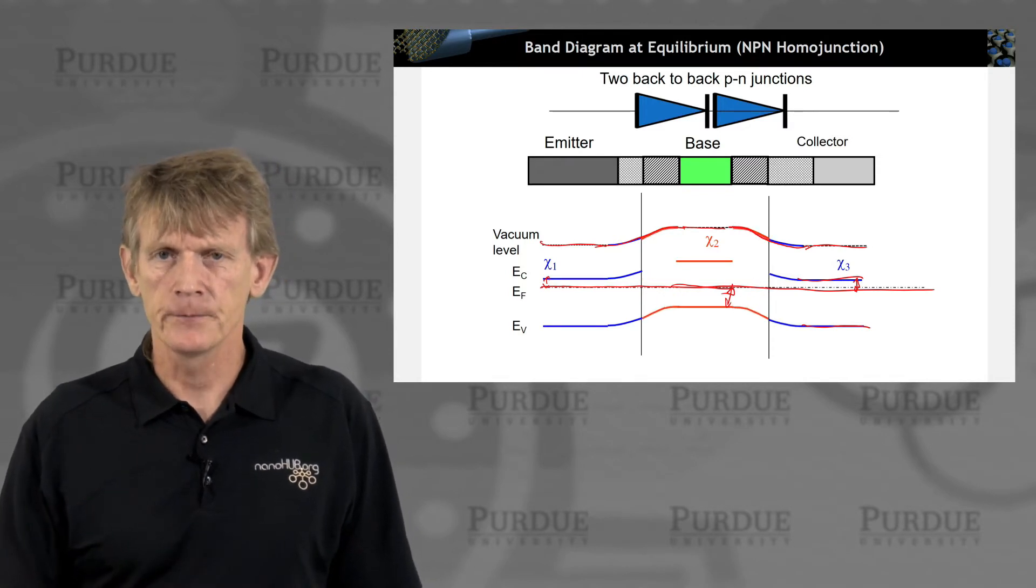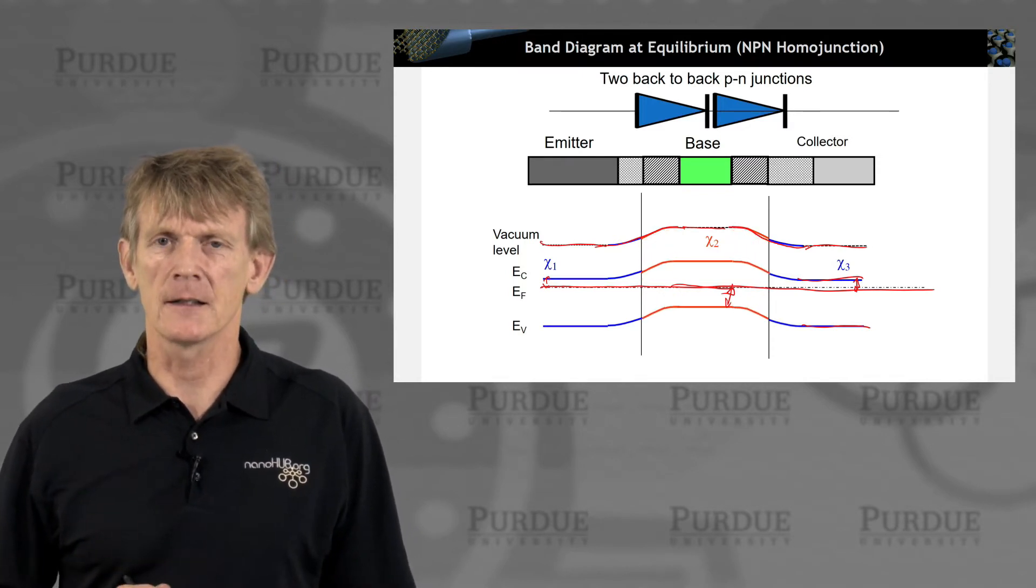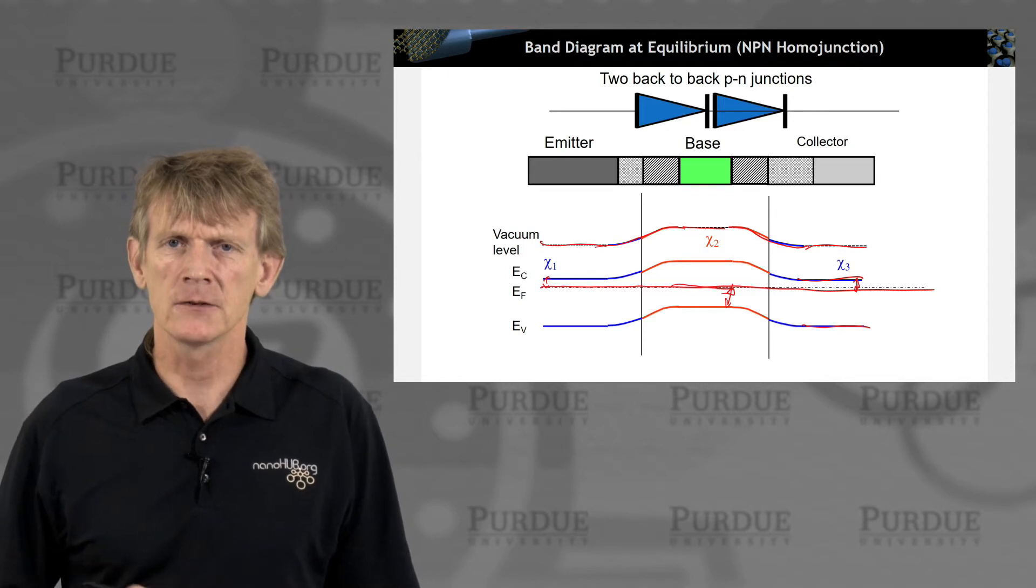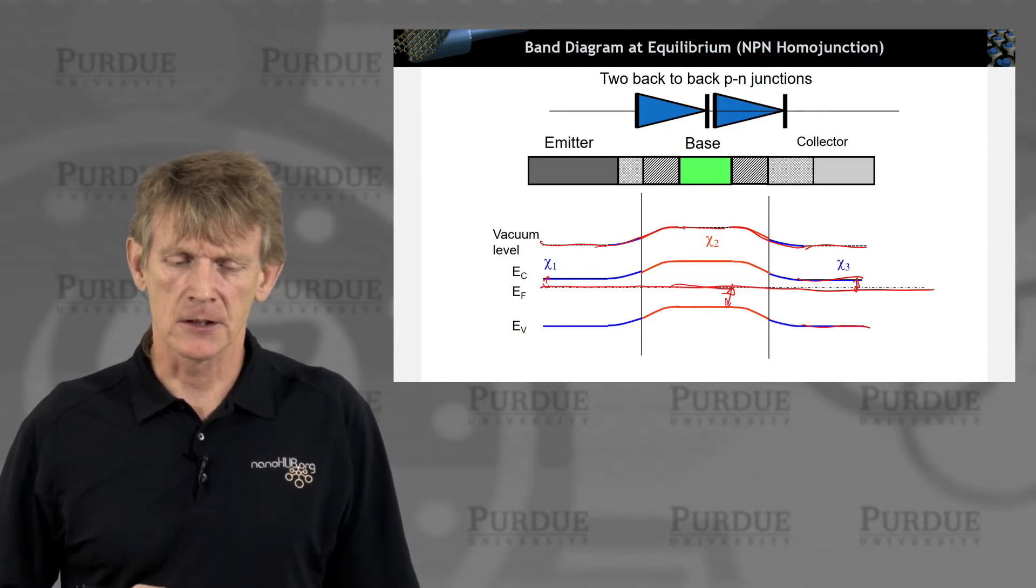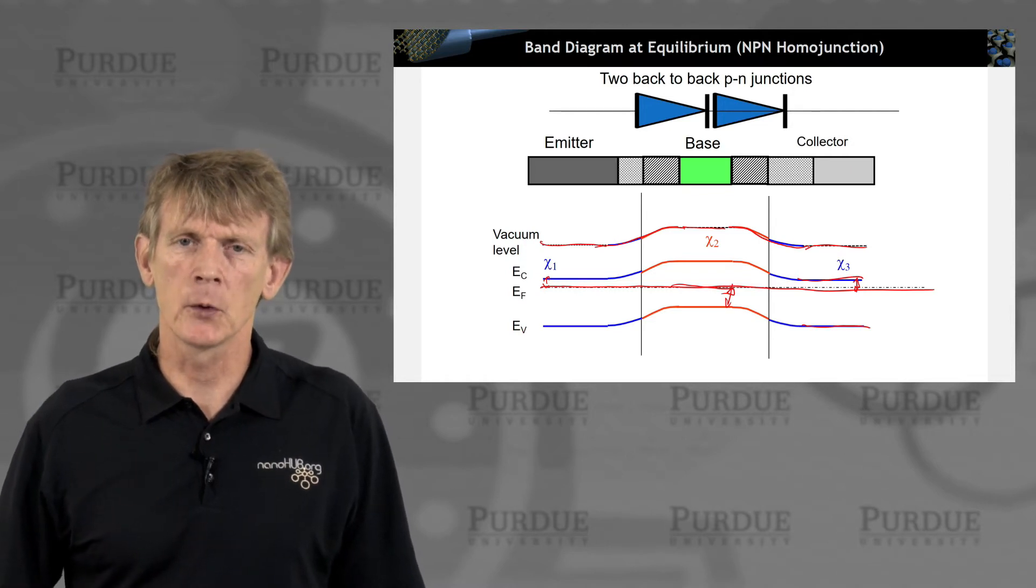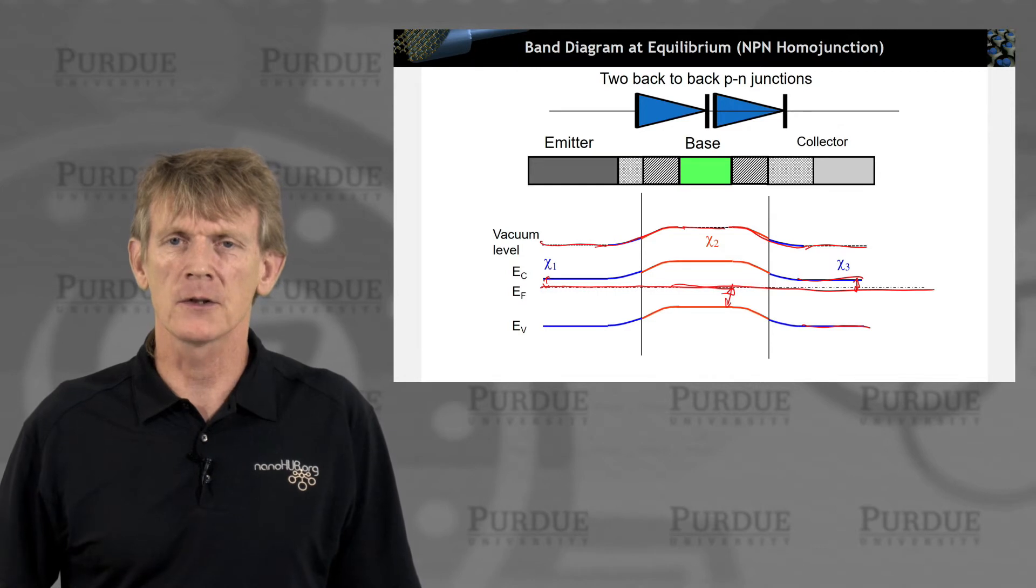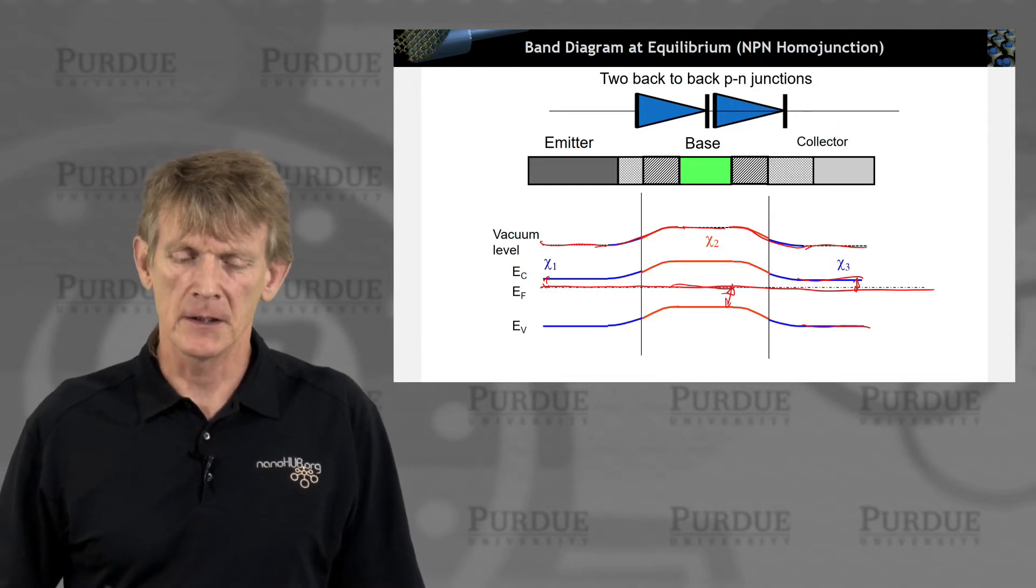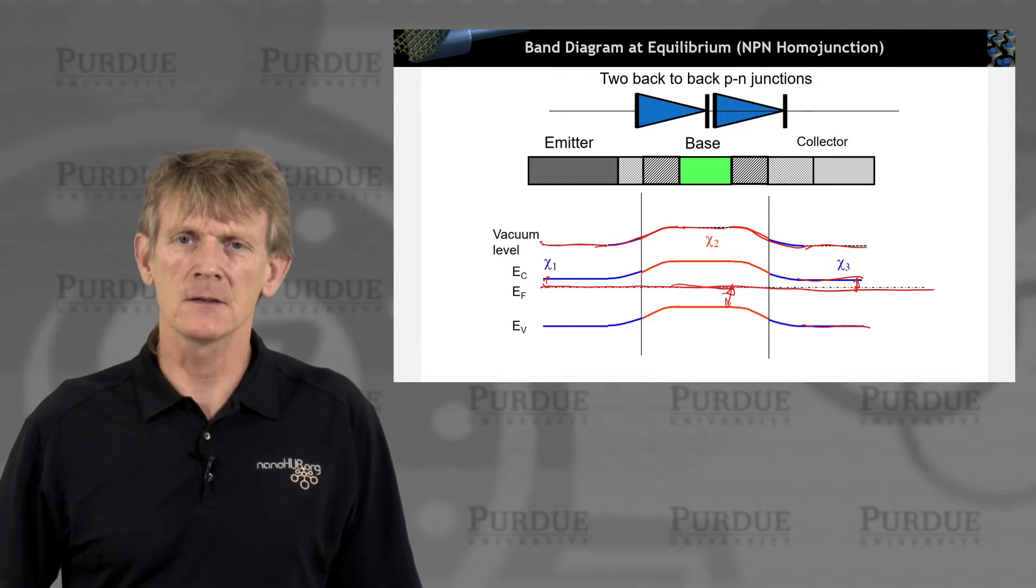If they don't connect, you might have a heterostructure like we had in the Schottky contact. Here we're considering just a homojunction transistor. In a later section, we will be talking about a heterojunction transistor, where this will not look as neat. But here there's nothing new. You've seen this before.